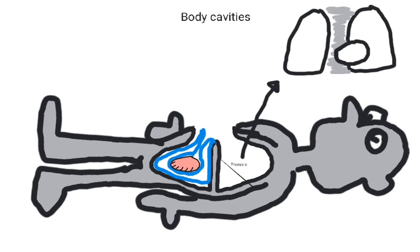Serous membranes produce serous fluid, which helps to lubricate these organs. This is important because they all move, and serous fluid helps to reduce friction when these organs move. This fluid can also provide a small amount of nutrients.